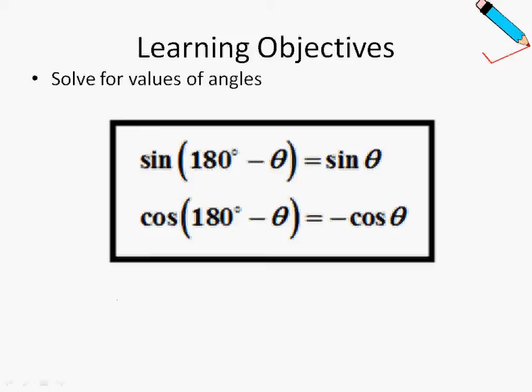Today's learning objectives — we'll focus on these two formulas. Sine of 180 degrees minus theta, where theta is a Greek symbol, equals sine theta. And cosine of 180 degrees minus theta is equal to negative cosine theta.